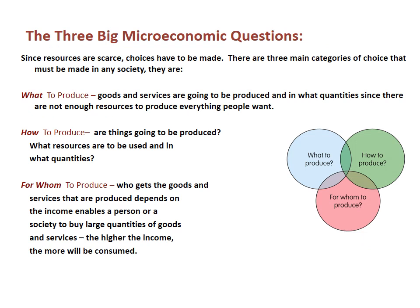It's important to know what each factor of production earns: rent, wages, interest, and profit. Now we move on to the big microeconomic questions. Resources are scarce — that's the central problem in economics — so choices have to be made. There are three main categories of choices in any society.